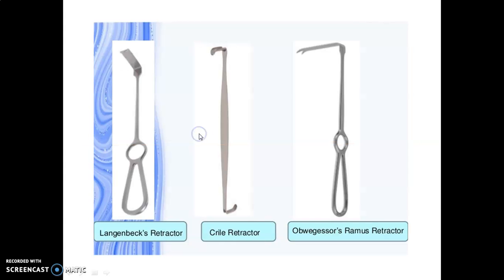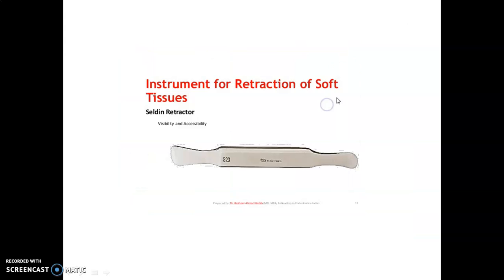Sheldin, Kocher, and Langenbeck retractors are used to retract soft tissue. Key image-based identifications: the Langenbeck retractor, the Cryer retractor, the ramus retractor, and the Sheldin retractor.